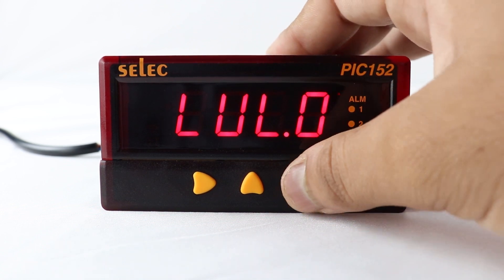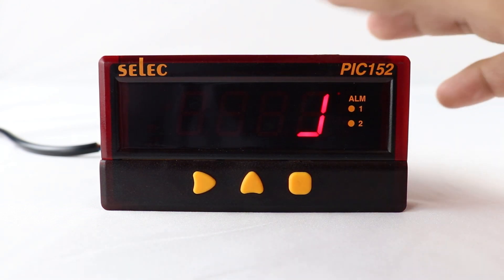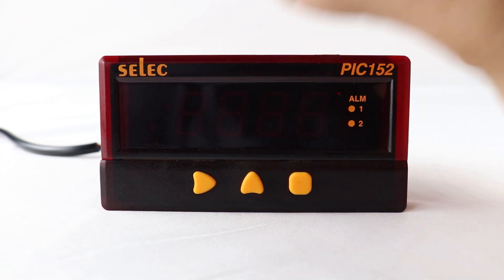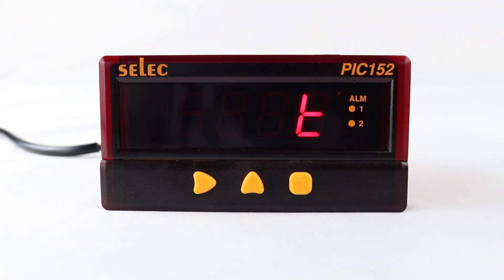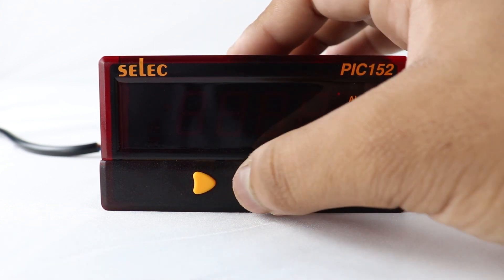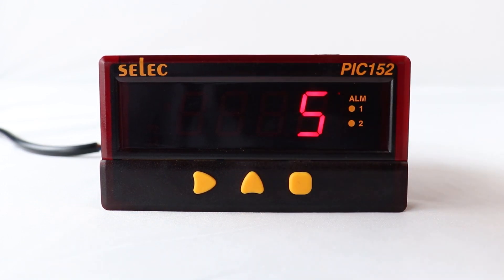Press square key to select input sensor type. Wherein you can toggle between various input sensor types, which consists of J-type, K-type, T-type, R-type, S-type thermocouple.